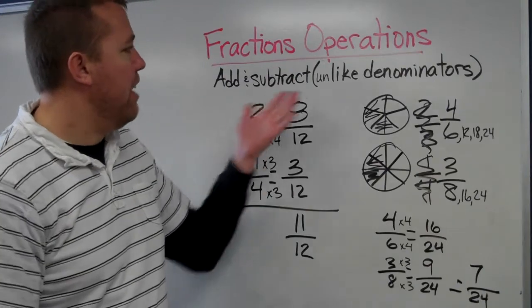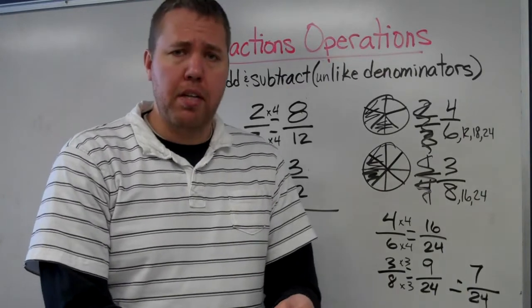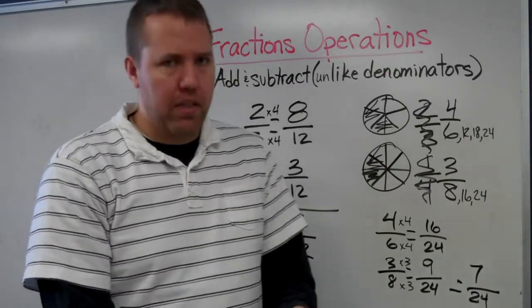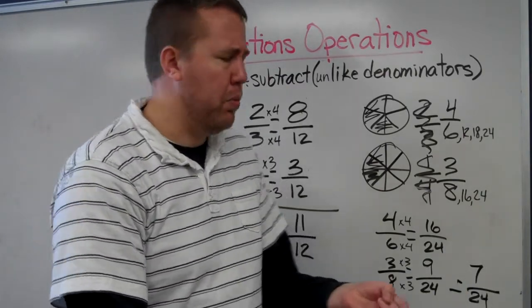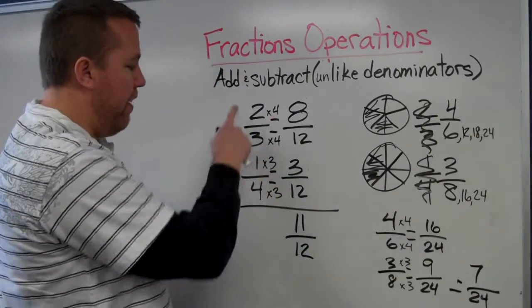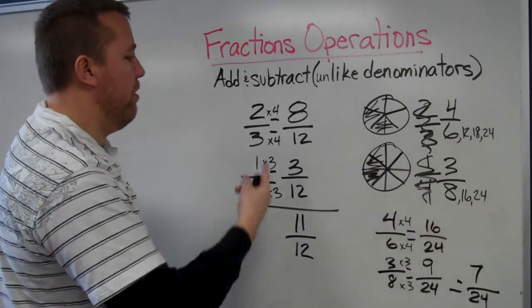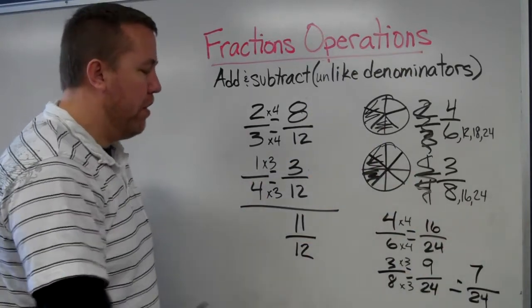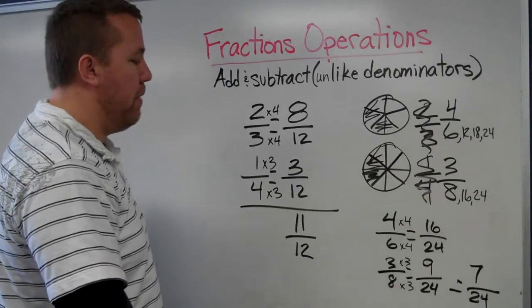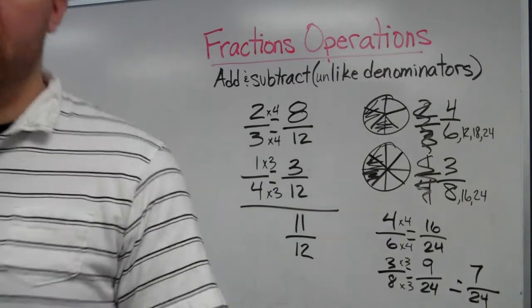That is adding and subtracting with unlike denominators. You need to find a common denominator - preferably the least common denominator, less work. Then use equivalent fractions. I have thirds and fourths - let's make them both twelfths using equivalent fraction skills. When I have the same denominator, the denominator stays, and I just add or subtract the numerators.